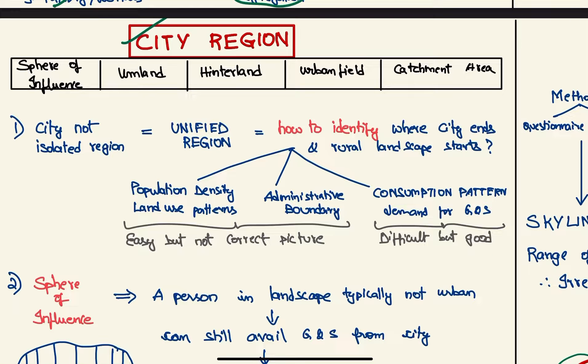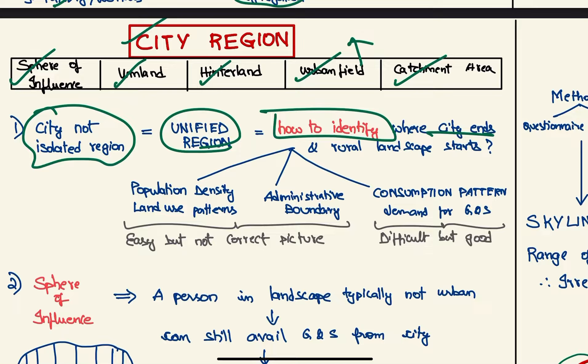The city region is also called sphere of influence, or umland in Germany, or hinterland, or urban field, or catchment area. These are different names for city region. As we know, the city is not an isolated region but a unified region. So the main issue is how to identify where the city ends and where the rural landscape starts.